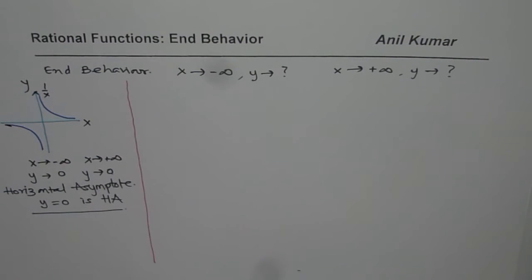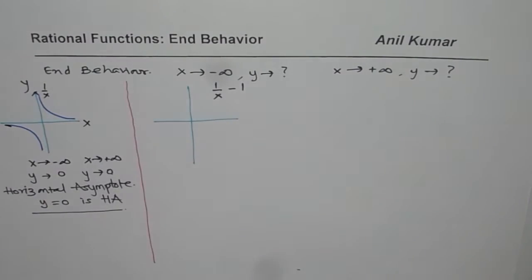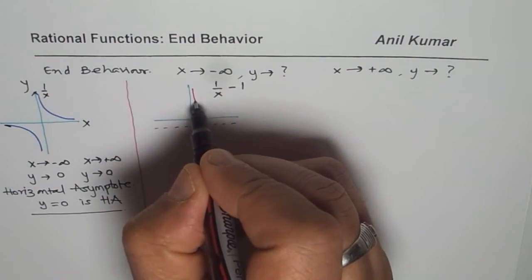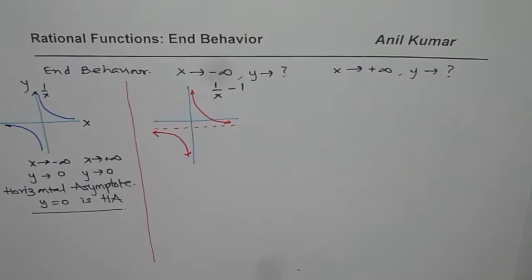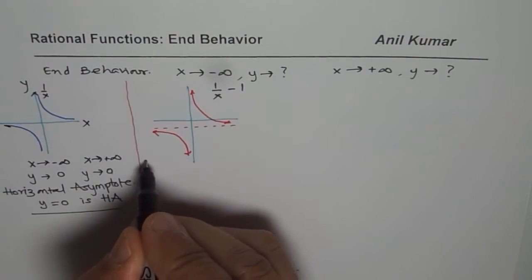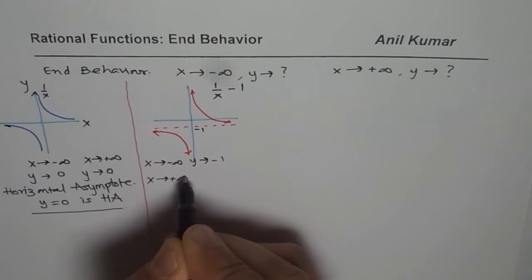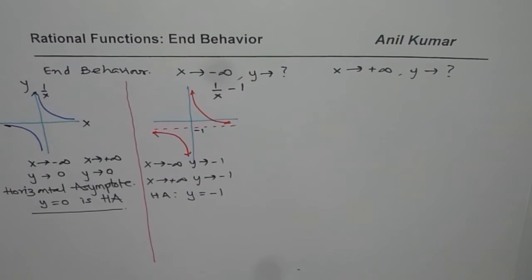This horizontal asymptote could change if we transform our function. So if we consider the function 1 over x minus 1, the whole graph comes one unit down. In this case, as x approaches negative infinity, y is approaching minus 1. As x approaches positive infinity, y again approaches minus 1. We say the horizontal asymptote is y equals minus 1. That is the end behavior for this particular case.